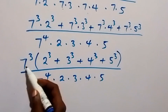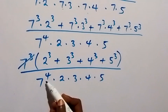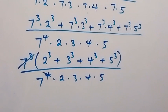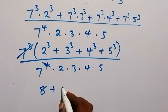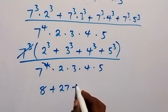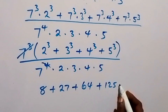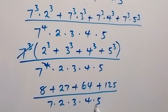Then this 7 cubed in the numerator cancels with the 7 to the power 4 in the denominator, leaving just 7. Up in the numerator what we have now is simply: 2 cubed is 8, plus 3 cubed is 27, plus 4 cubed is 64, then plus 5 cubed is 125. Divided by 7 times 2 times 3 times 4 times 5.